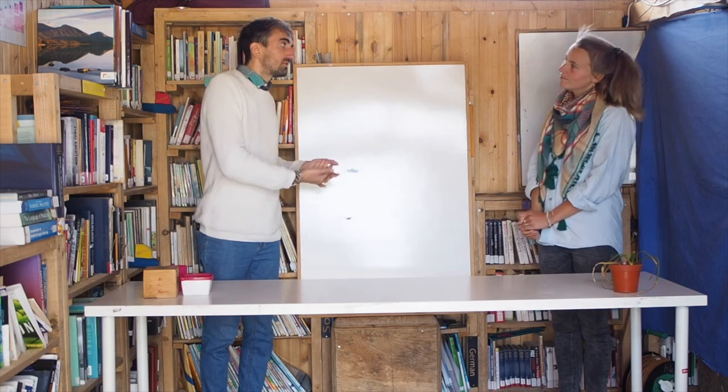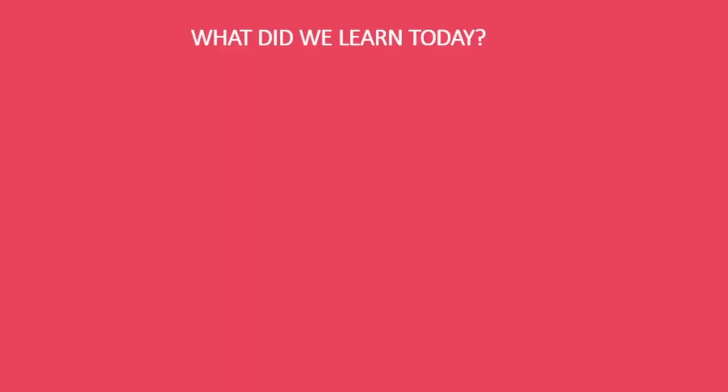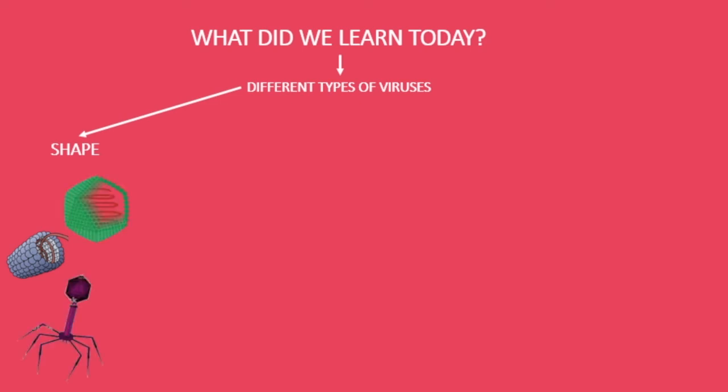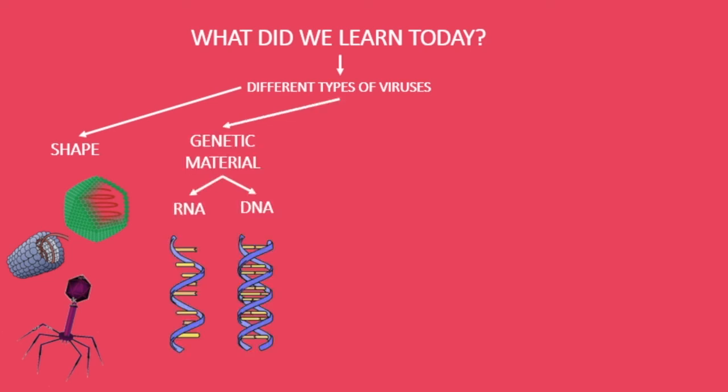Qu'avons-nous appris aujourd'hui? Il existe plusieurs types de virus. Selon leur forme, ils peuvent avoir un aspect de cylindre, de boîte ou avoir un aspect plus complexe. Selon leur matériel génétique, ils peuvent avoir de l'ADN ou de l'ARN.